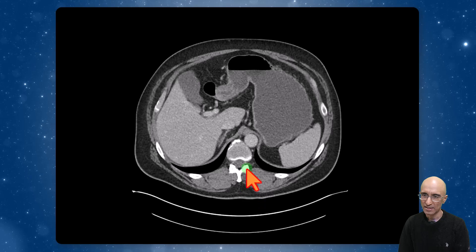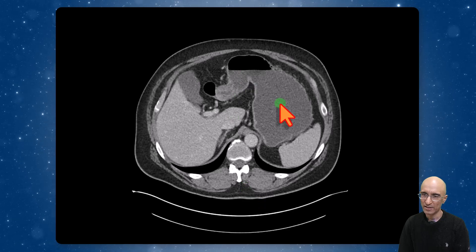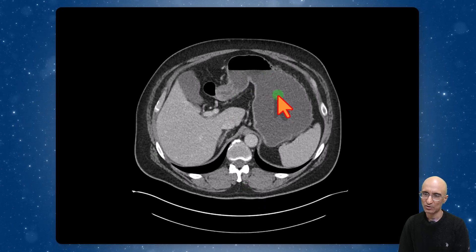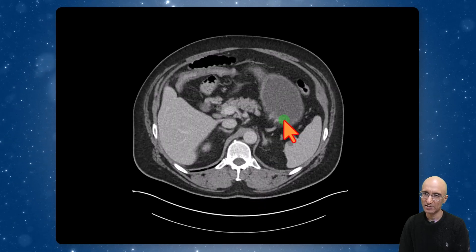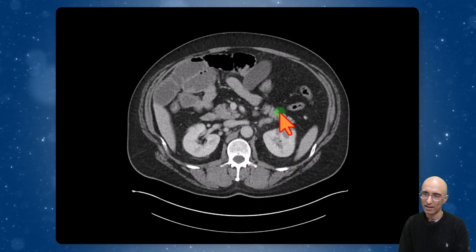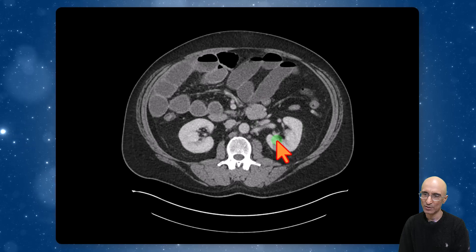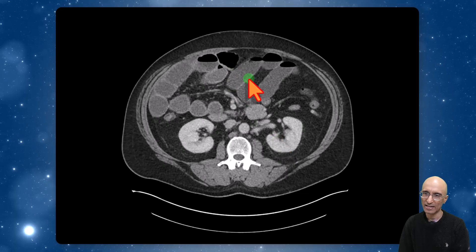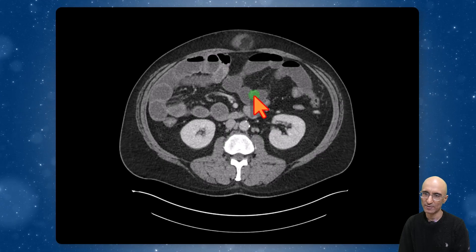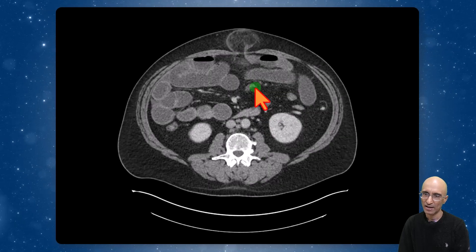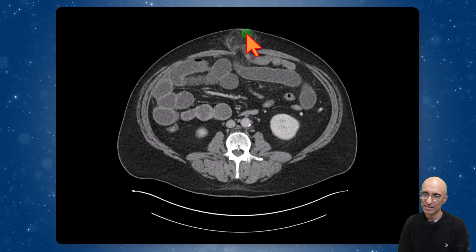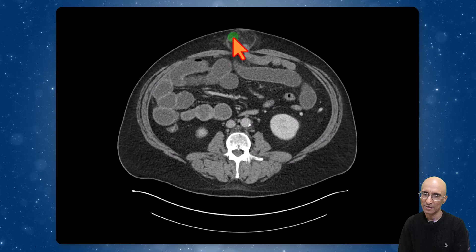On the CT examination we can clearly see the stomach is distended and fluid filled. As I scroll down we can see dilated fluid-filled small bowel loops, and we can also see an umbilical hernia.